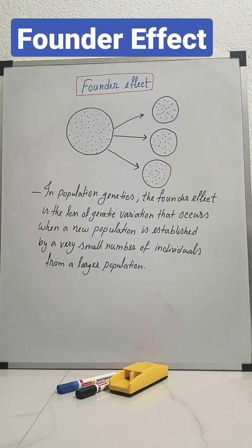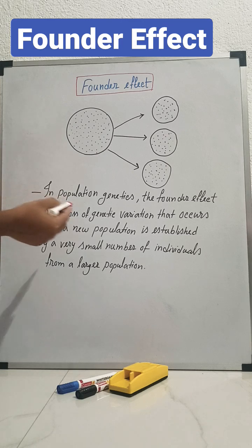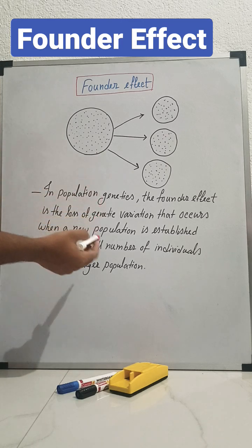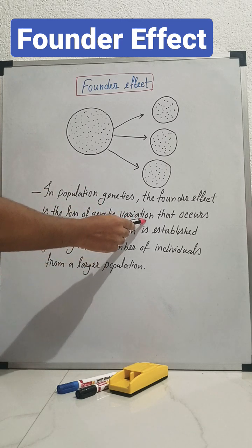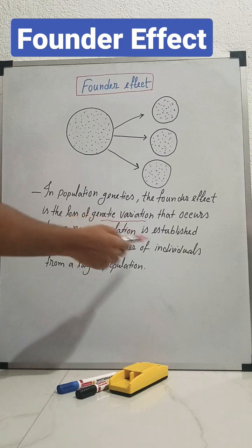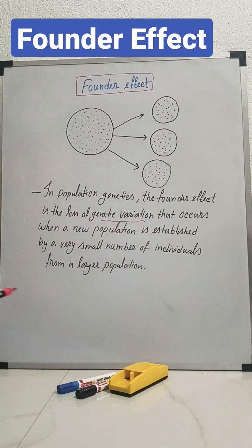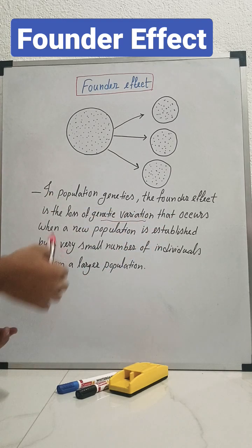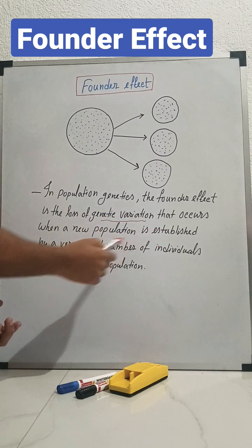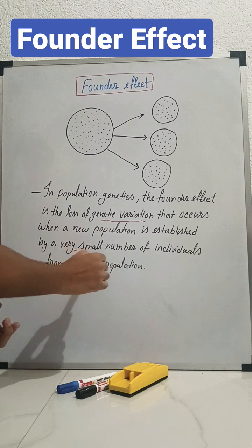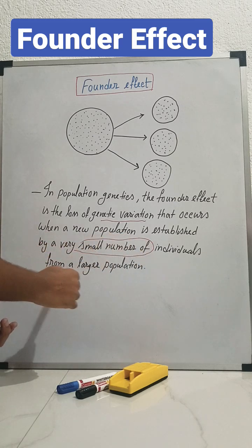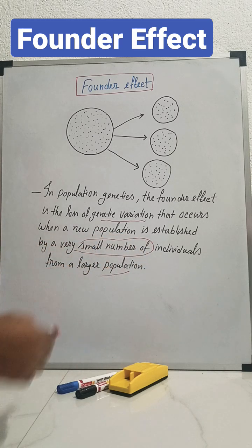Today we will discuss what is the founder effect. In population genetics, the founder effect is the loss of genetic variation that occurs when a new population is established by a very small number of individuals from a larger population.